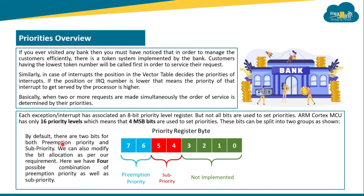By default, two bits are allocated for preemption priority and two bits for sub priority. We can also modify this bit allocation as per our requirement. With two bits each, there are four possible combinations for both preemption priority and sub priority — this is the default configuration.